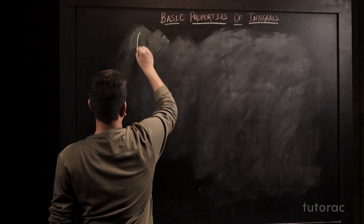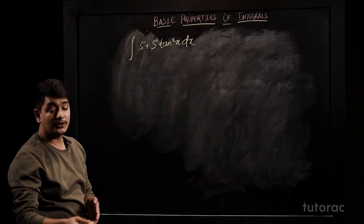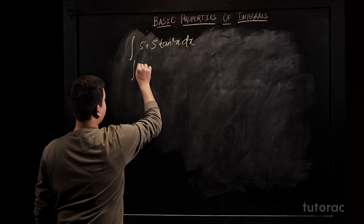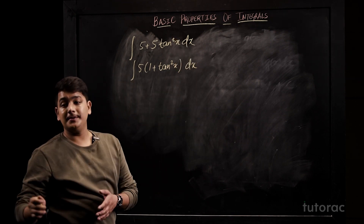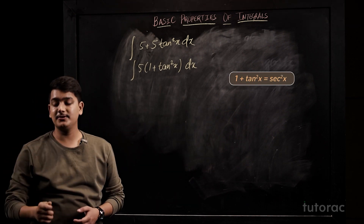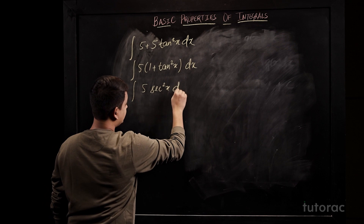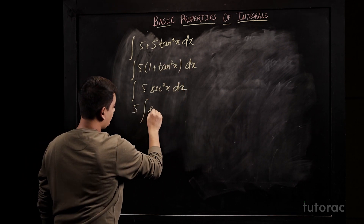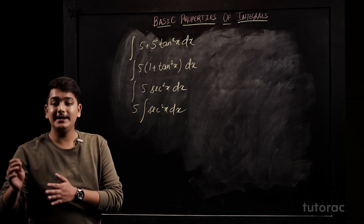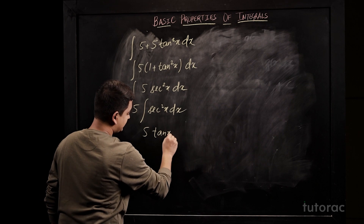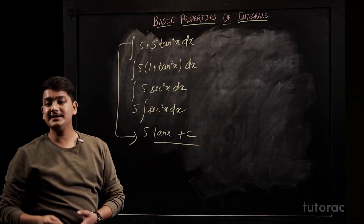Suppose we have the function (5 + 5tan²x) dx. First, we can take 5 common, giving us 5(1 + tan²x) dx. Using the trigonometric identity 1 + tan²x = sec²x, we write it as 5sec²x dx. Since 5 comes out and the integral of sec²x is tan x, the integral is 5tan x + c.